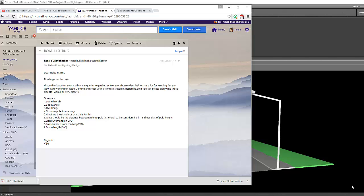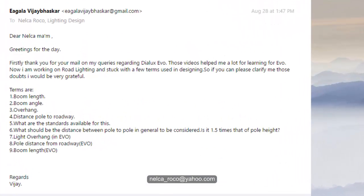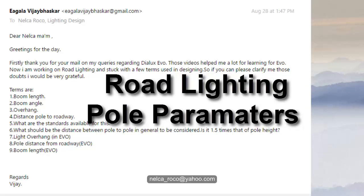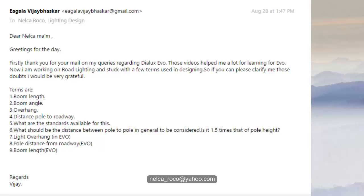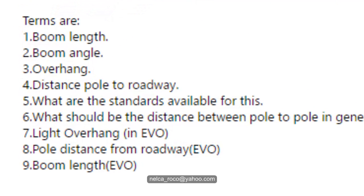One more question from our subscriber. Here's another email from our friend Vijay, and this is all about road lighting. He has some clarification about the poles — he's asking about terms like the boom length, the boom angle, overhang distance, pole to roadway. What are the standards available for this? What should be the distance between pole to pole? Is it 1.5 times the pole height? What is light overhanging and pole distance from roadway and boom length?